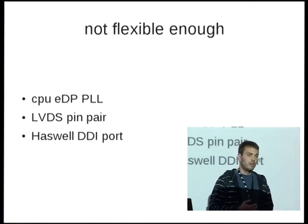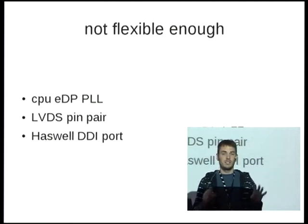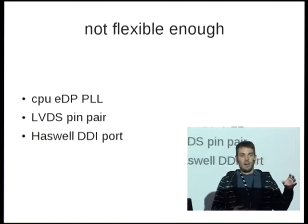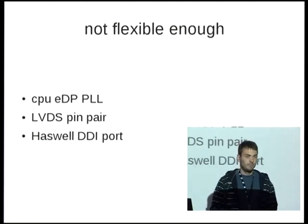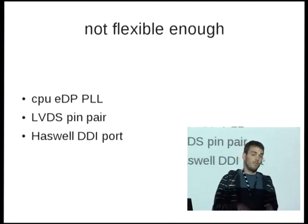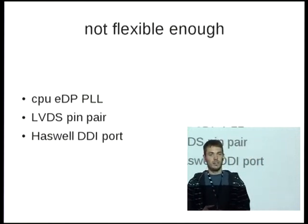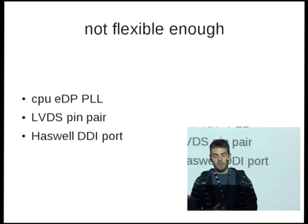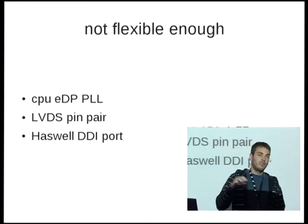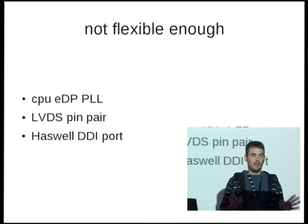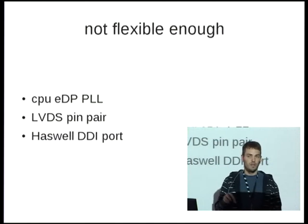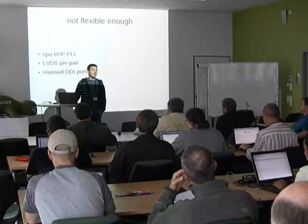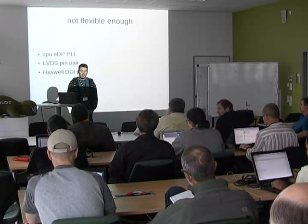The first problem is that it's not flexible enough. We have lots of different corner cases in the hardware. For example, the CPU eDP port has its own special PLL assigned to the port, not to the pipe. On the enable sequence, we first have to enable the PLL, then enable the pipe, and afterwards enable the actual DisplayPort and do link training. So we actually need two callbacks here. Similarly for LVDS, we have to enable the LVDS pin pairs without any clocks before we switch on the main PLL on the pipe — again requiring a callback at a different point than what the single CRTC helper callback exposes.